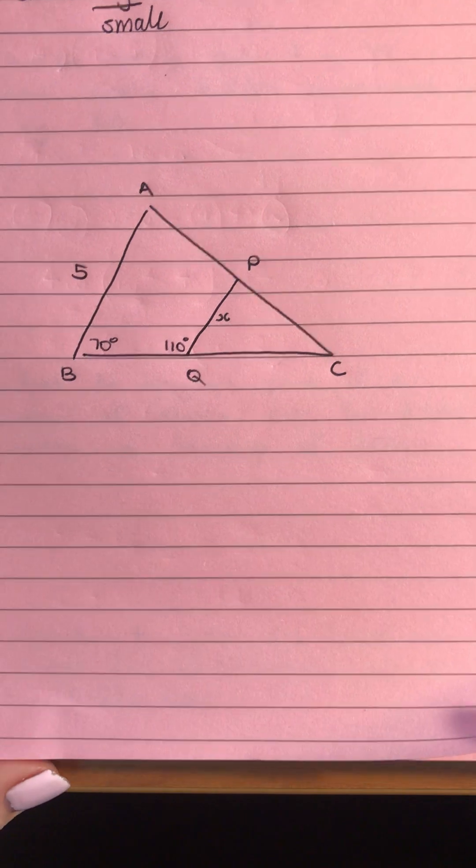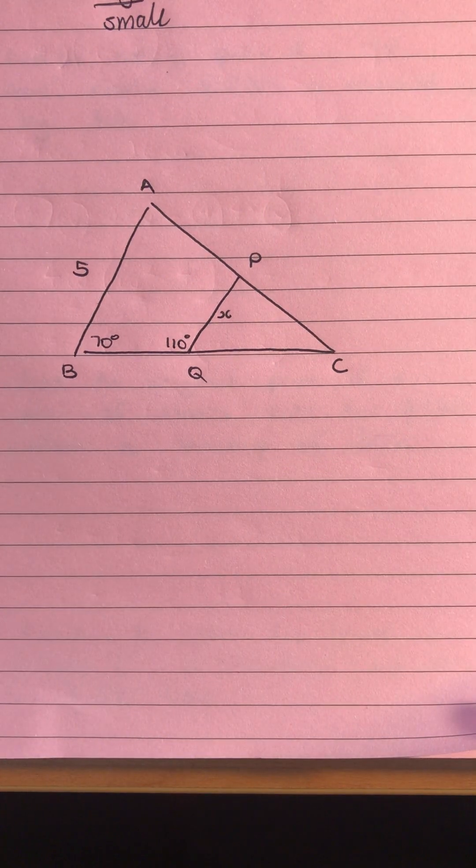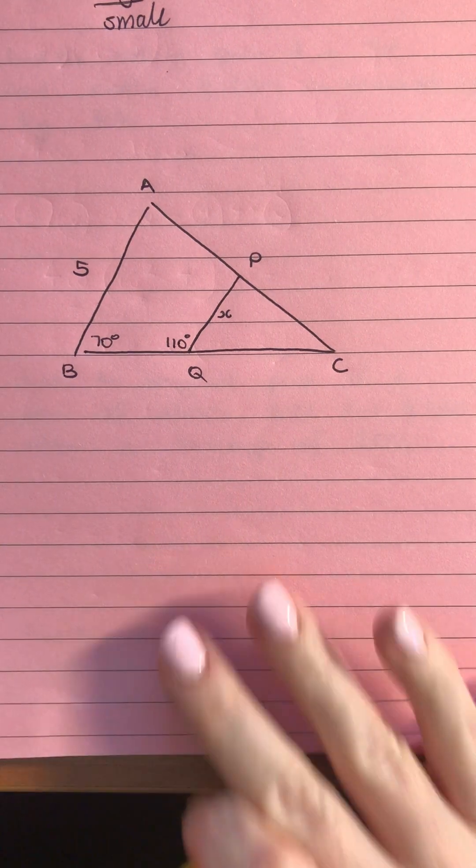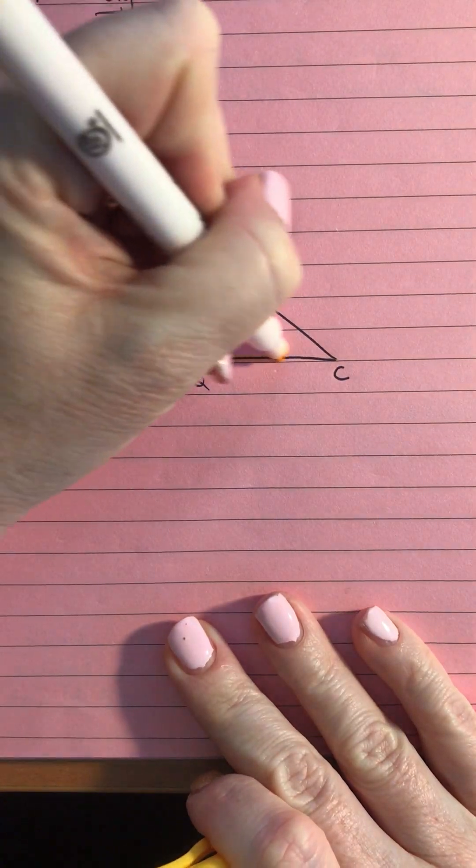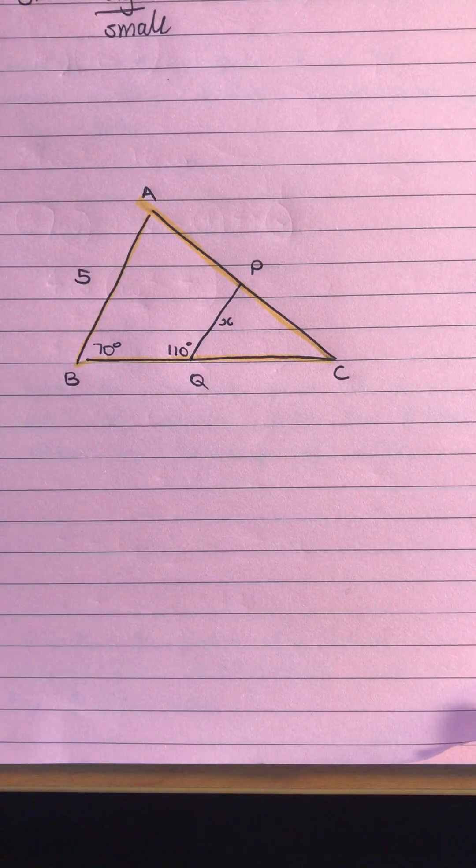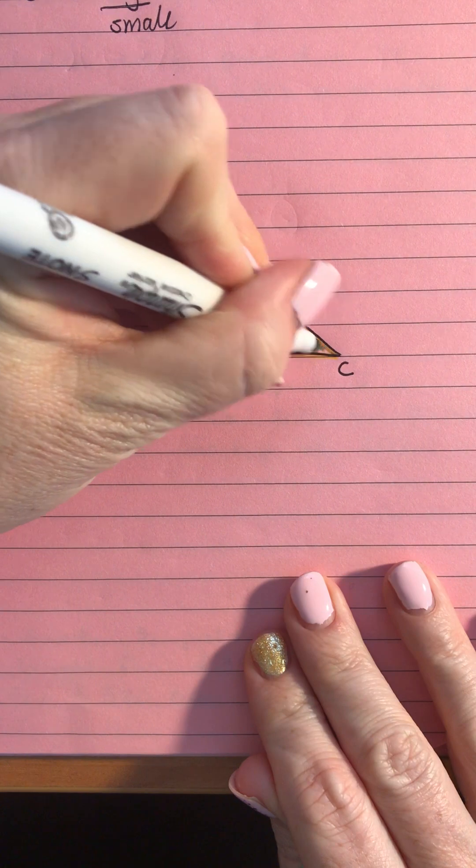I've got a little example here where we've got to prove they're similar and then find out the x value. So we've got our triangle, our big triangle ABC and then we've got our little triangle which is PQC there.